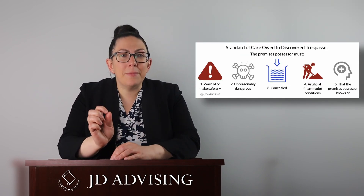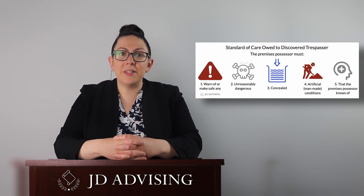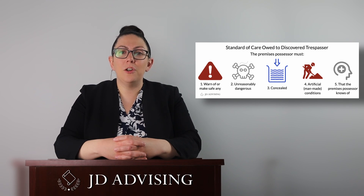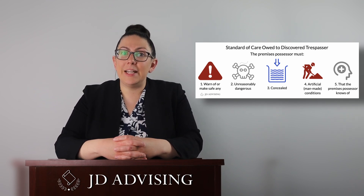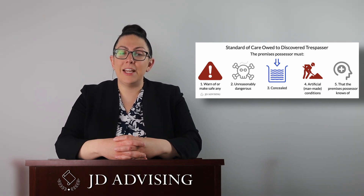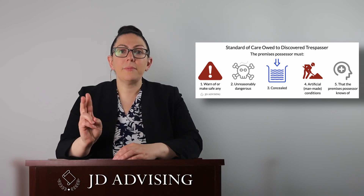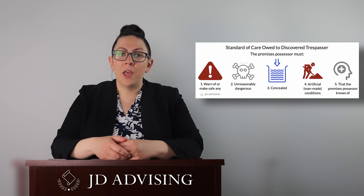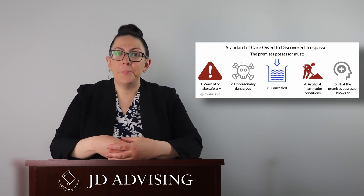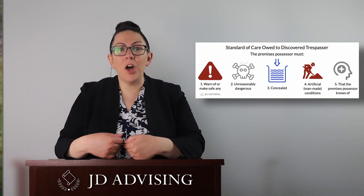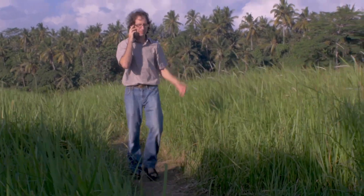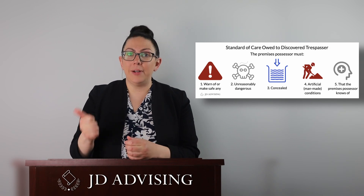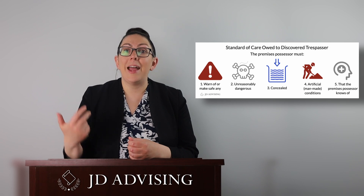A premises possessor owes a very small duty to a discovered trespasser. Here, the premises possessor must warn or make safe any unreasonably dangerous, concealed, artificial conditions that the premises possessor knows of. To remember this rule, break it down into four parts: the danger must be number one, unreasonably dangerous; number two, concealed; number three, artificial; and number four, the possessor must know about the danger. For example, if there is a downed power line in my backyard hidden by tall grass and I know my neighbor regularly cuts through my backyard, I have a duty to warn my neighbor about that downed power line. It is unreasonably dangerous, concealed by the tall grass, artificial, and I know about it.